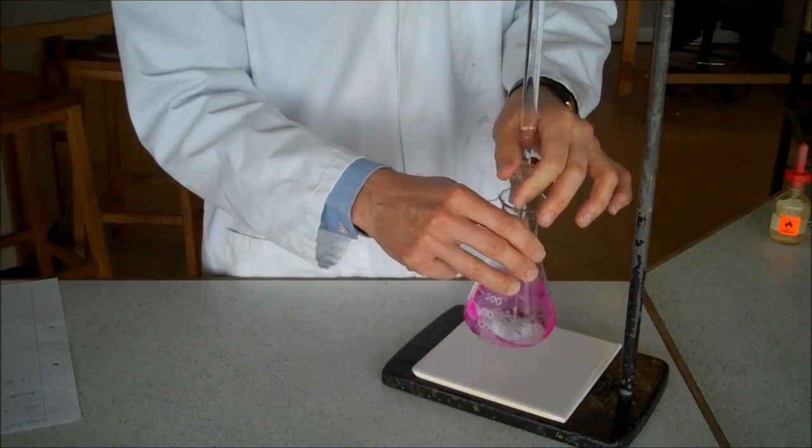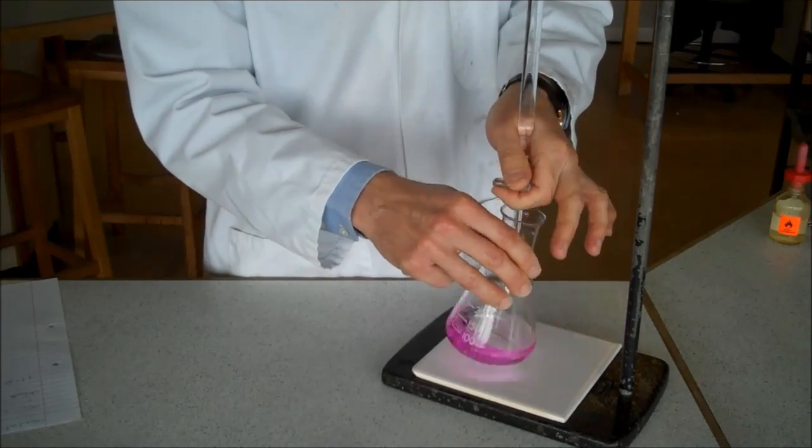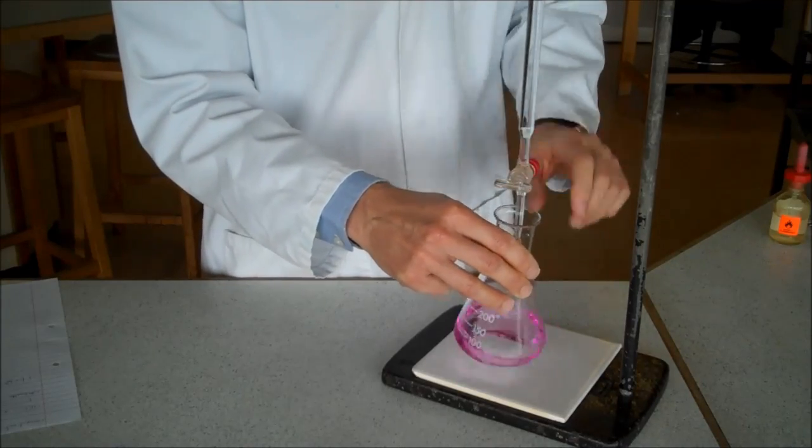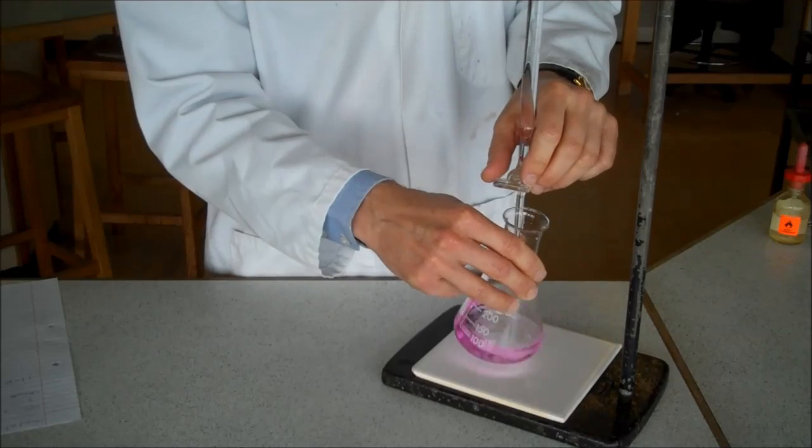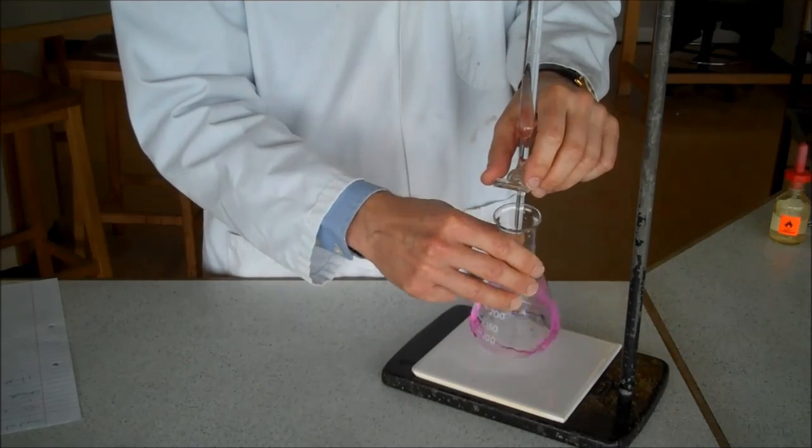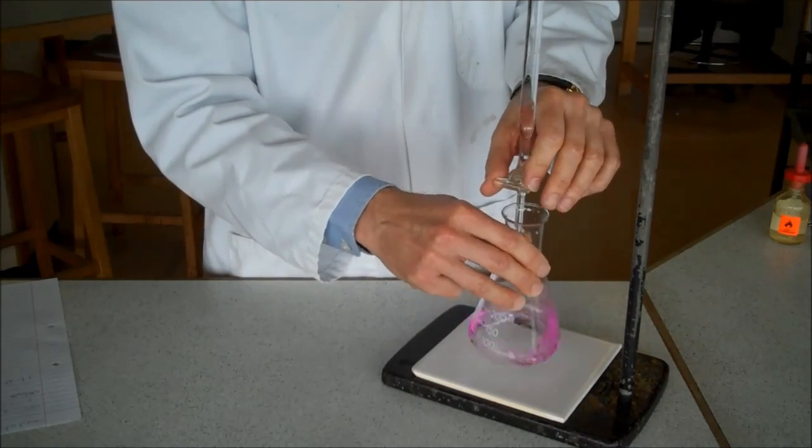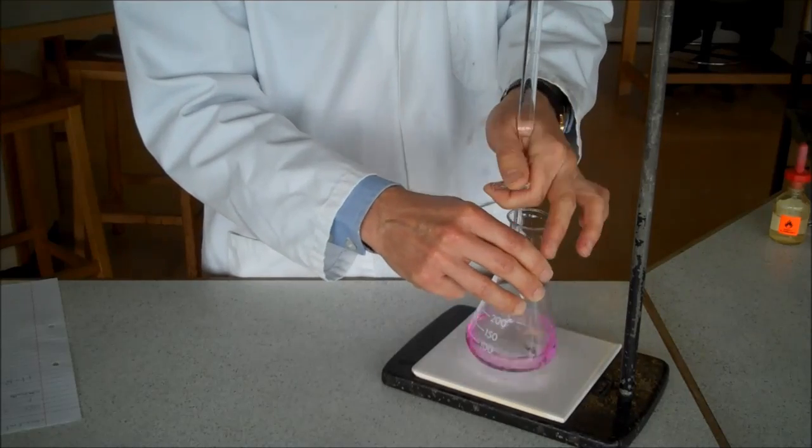By the way, in case I didn't mention it, the white tile is there so I can see even the faintest colour pink. You might see it's gone fairly faint pink now. One or two drops of acid is all it's going to take.